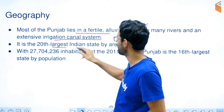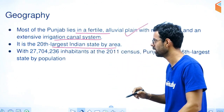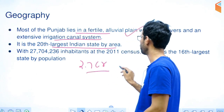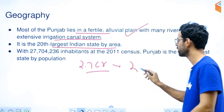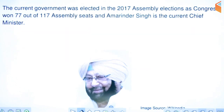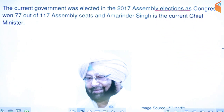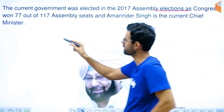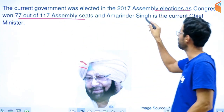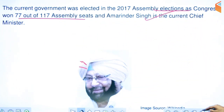Punjab is the 20th largest Indian state area-wise. Population as per 2011 census is approximately 2.7 crore, making it the 16th largest by population. In the 2017 assembly election, Congress won and Mr. Amrinder Singh became the Chief Minister, with 177 seats in the assembly.